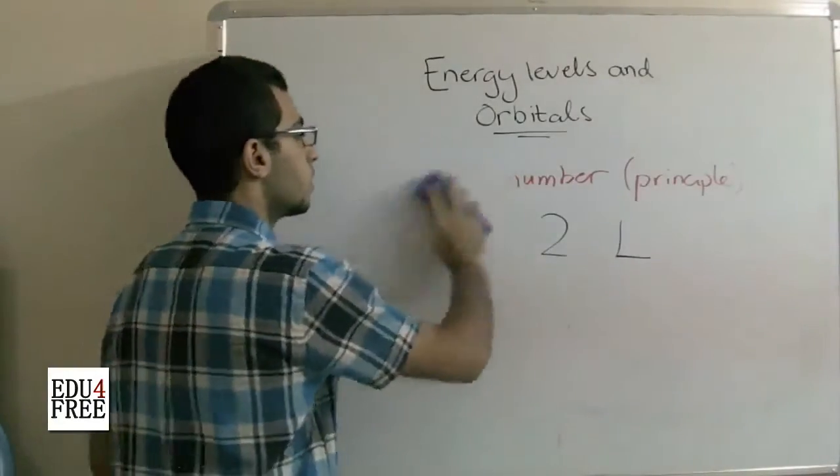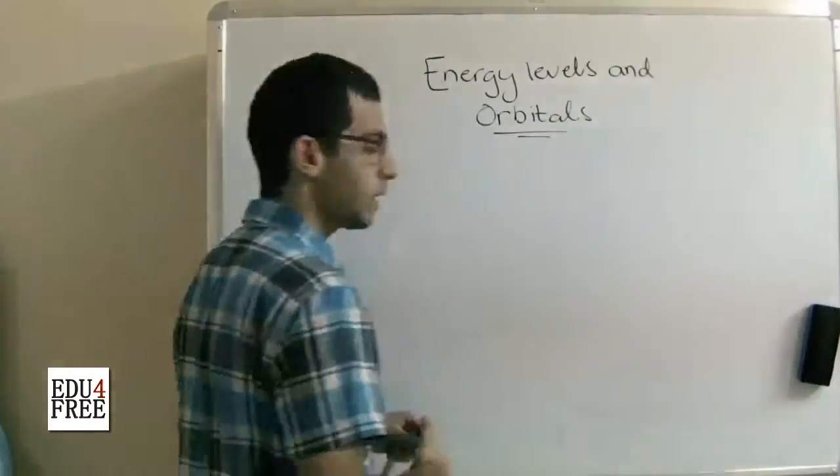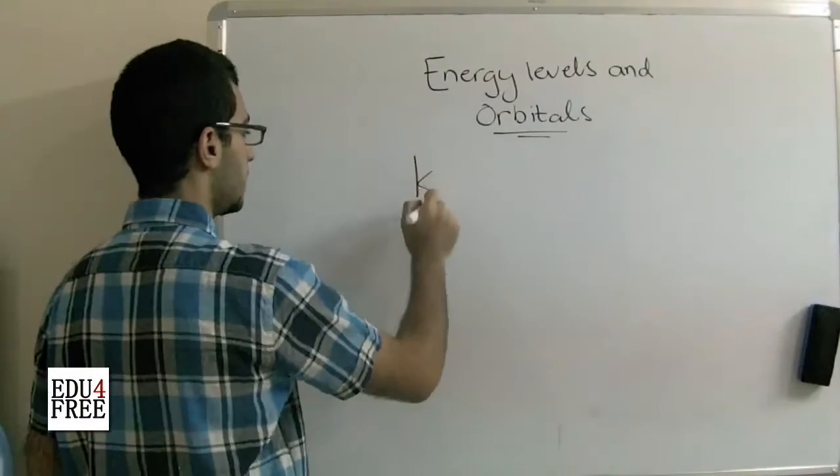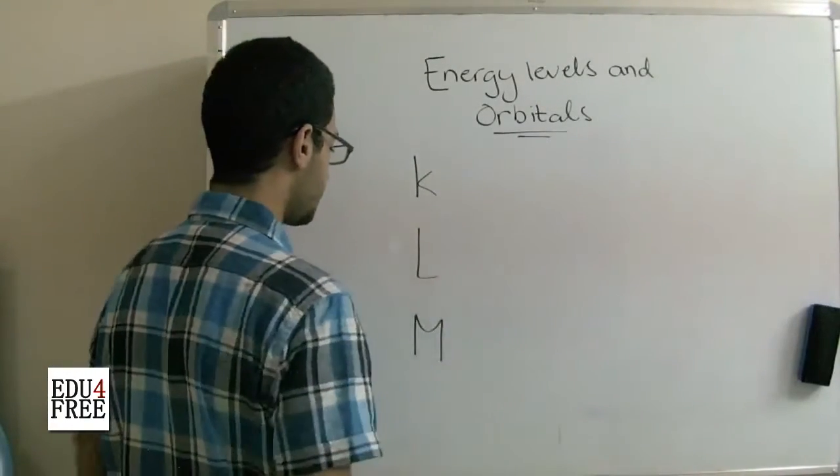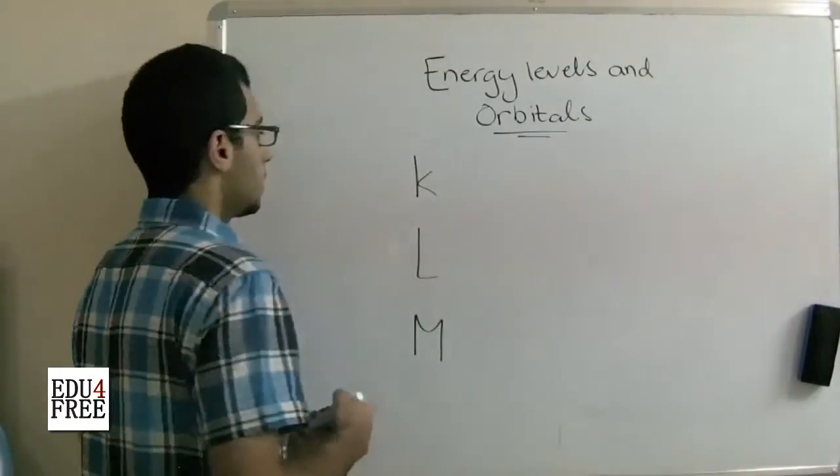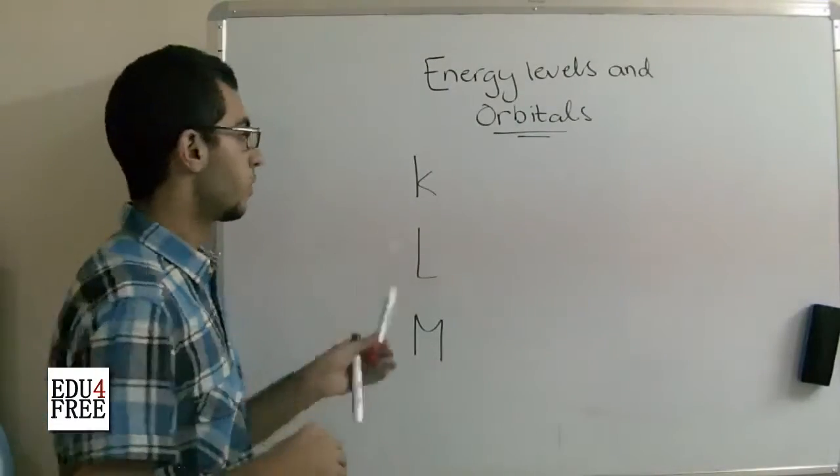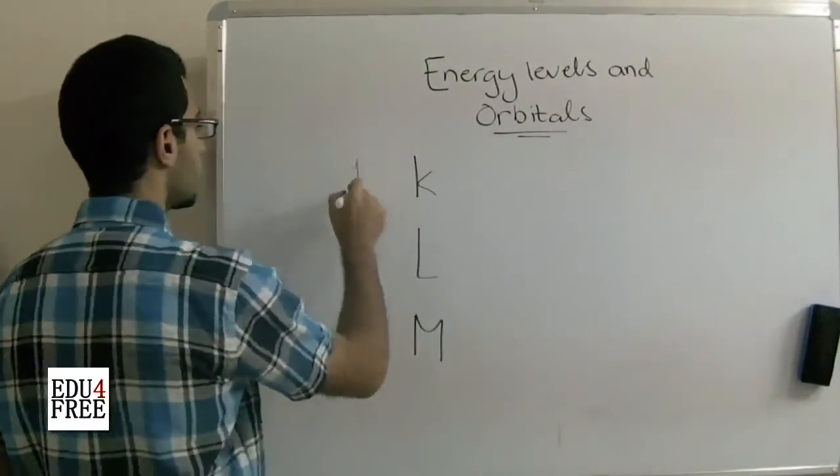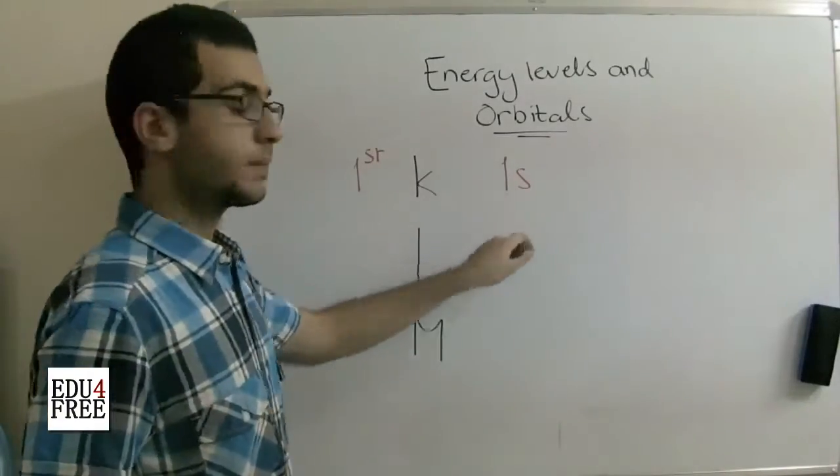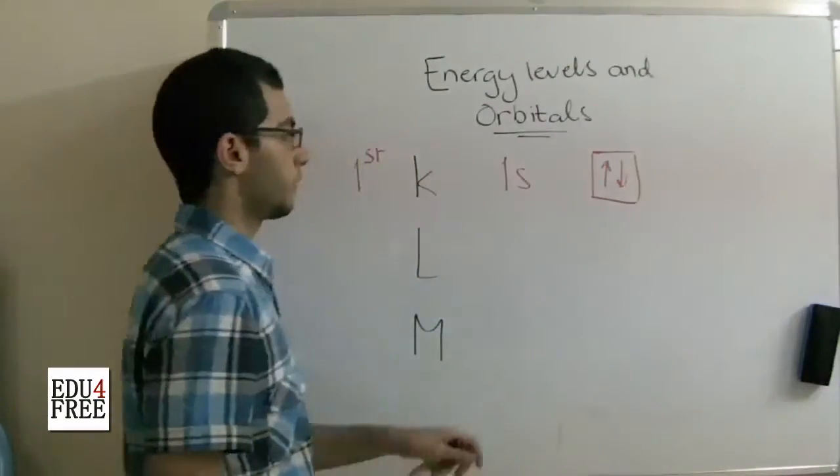So finally, we are going to type the electronic configuration of the energy levels in the electrons, the K, the L, the M, through typing the spin quantum number. And the spin quantum number expresses the direction of rotation of electrons inside an orbital. So the K level is the first energy level and so it contains the 1s orbital. This 1s orbital carries 2 electrons. So the electronic configuration will be like that.